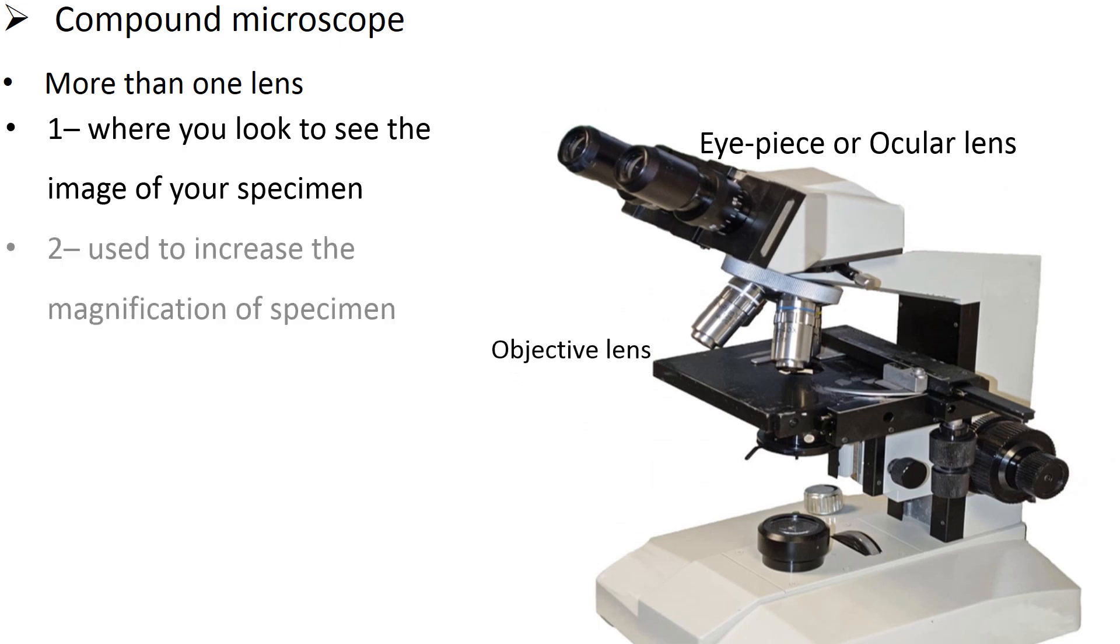Second one is the objective lens, used to increase the magnification of the specimen. The eyepiece also increases the magnification of the specimen. Third one is the condenser lens, which collects and focuses the light from the illuminator to the specimen.